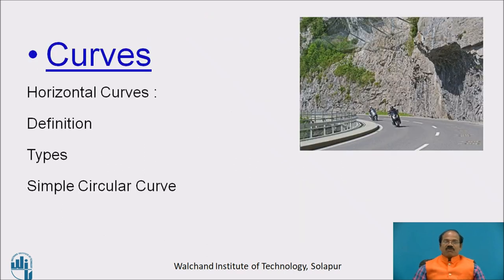All of us are familiar with curves in our day-to-day life. There are vertical curves as well as horizontal curves. Horizontal curves are defined as curves introduced between two alignments or directions to have smooth change from one alignment to the other. There are four types of horizontal curves: simple circular curve, compound curve, combined curve, and reverse curve.